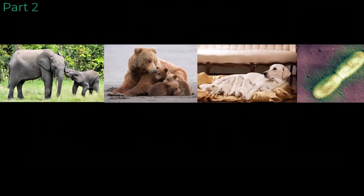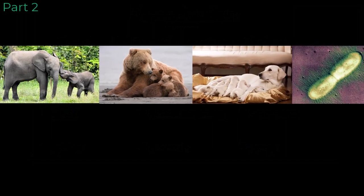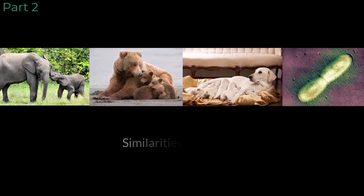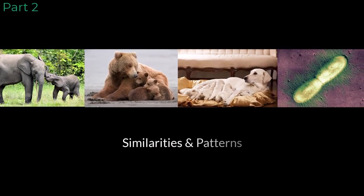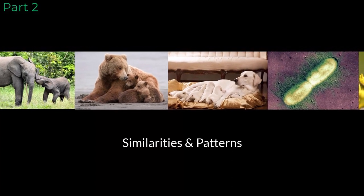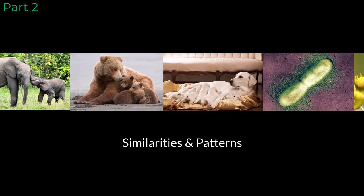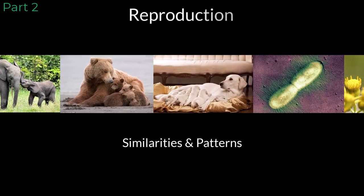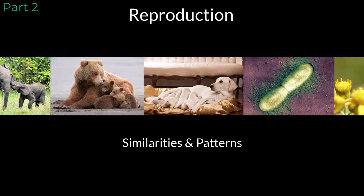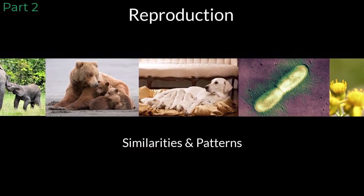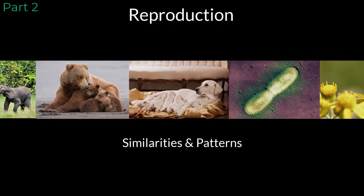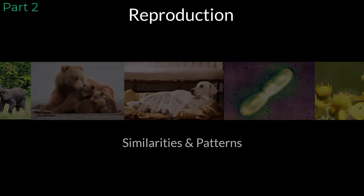The amazing thing about life on our planet is that there are many similarities and patterns between organisms that are interesting to study. And how organisms reproduce happens to be one of them. When we look at how organisms generally reproduce, we can split it up into two categories: sexual reproduction and asexual reproduction. Let's talk about how each one works.